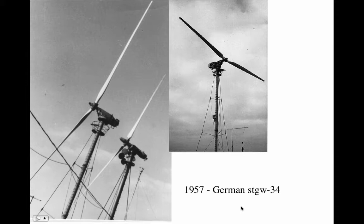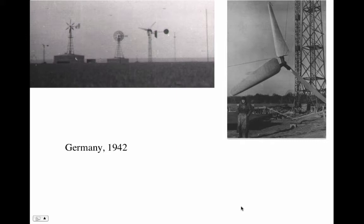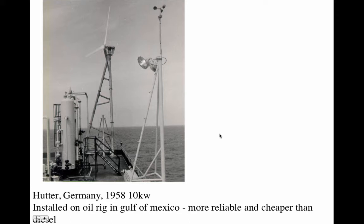Here's a German wind turbine from 1957 that was experimented with — a little wind turbine research place in Germany. You can see this rotor looks very much like a modern wind turbine rotor, built in 1942. Just think what kind of progress we'd have made if we had kept with it. Here's one in 1958 installed on an oil rig in the Gulf of Mexico because it was more reliable and cheaper than diesel.